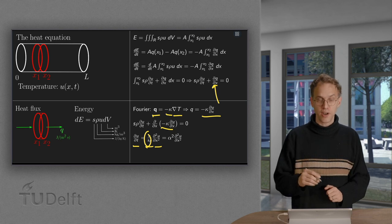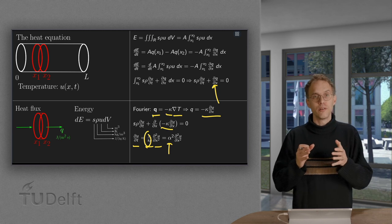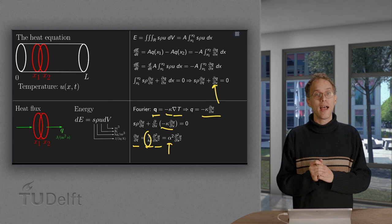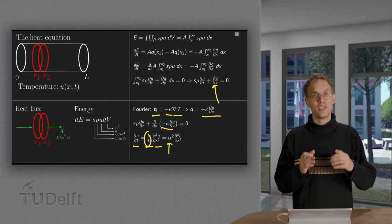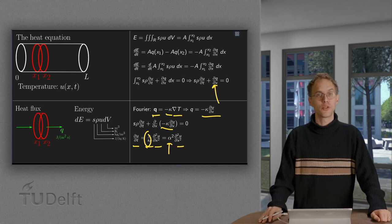And those constants over here, they are all positive. So, they are lumped in a new constant alpha squared to emphasize that we have a positive constant over there. And there we have our heat equation: dU dT is a positive constant times the second derivative of U with respect to X.